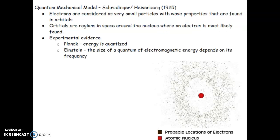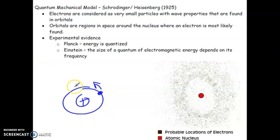So the quantum mechanical model — this is where we start talking about electrons a little differently. Electrons are no longer discussed as simply particles of matter. They do have mass and take up space, but the way they move is not how Bohr anticipated, in terms of orbiting around the nucleus. They behave more like a wavelength of energy — they are matter, but they behave as if they are energy.